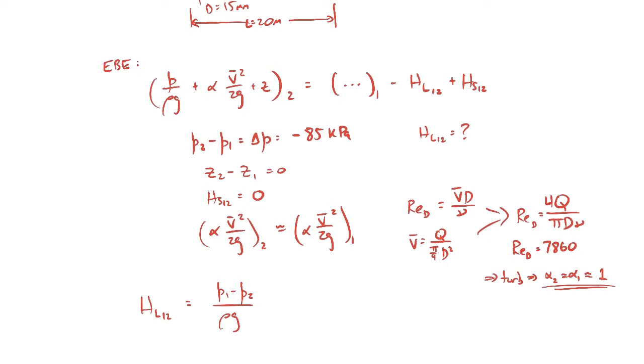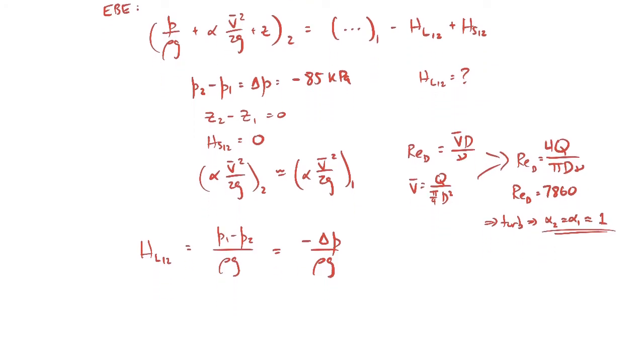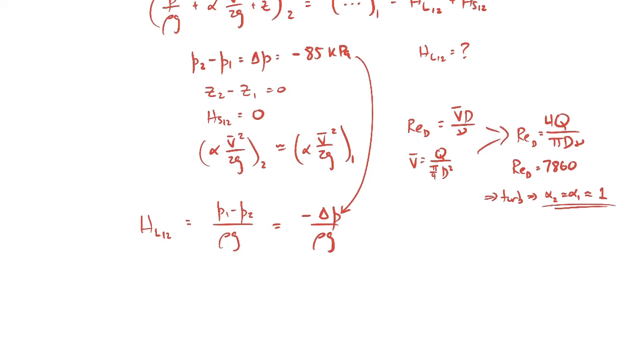This will be minus delta p over rho g. We know delta p - that's given. The density of water is a thousand kilograms per cubic meter, gravity is nine point eight one meters per second squared. Plugging in the numbers, the head loss between those two points comes out to be eight point six six meters.